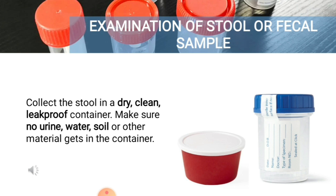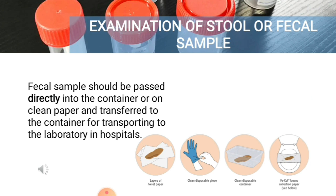For the type of container, you must collect the stool in a dry, clean, leak-proof container, ensuring no urine, water, soil, or other material enters the container. It is best to collect the fecal specimen in a clean, wide-mouthed container made of waxed cardboard or plastic with a tight-fitting lid to ensure retention of moisture and to prevent accidental spillage. The fecal sample should be passed directly into the container or on clean paper and transferred to the container for transport to the laboratory.